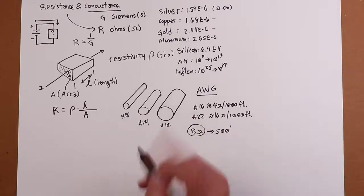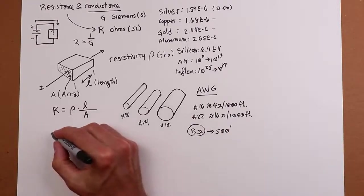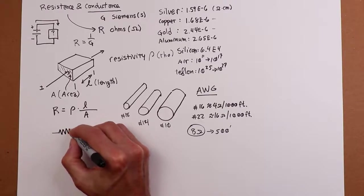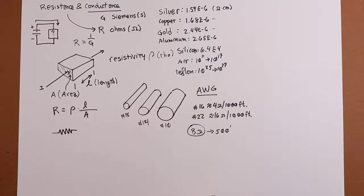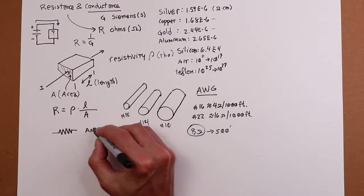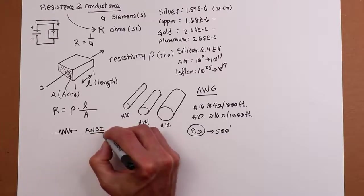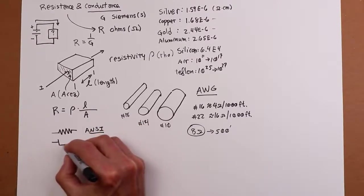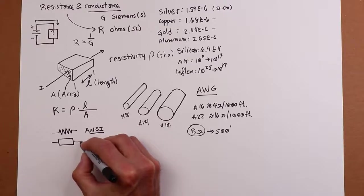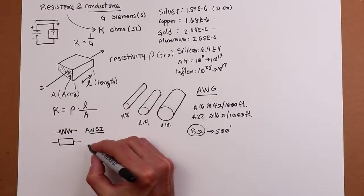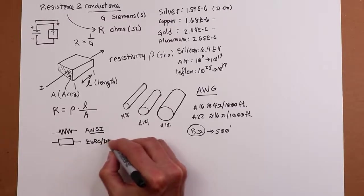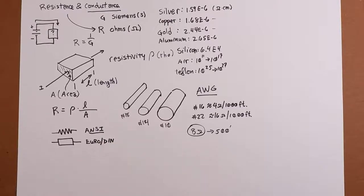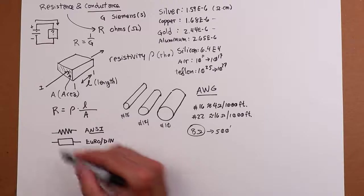Okay, schematic symbol for a resistor. So this is the ANSI symbol. This is the North American standard. The European standard, the Euro standard looks like this. It's just sort of a little box. It almost looks like that. So depending on where your schematic came from, you'll see one of the two.